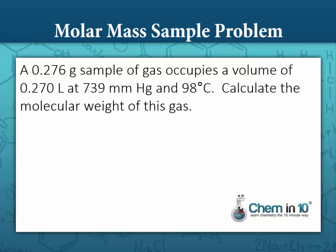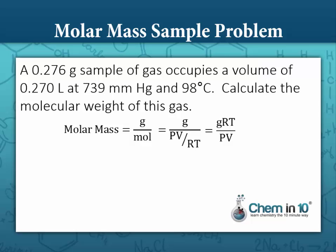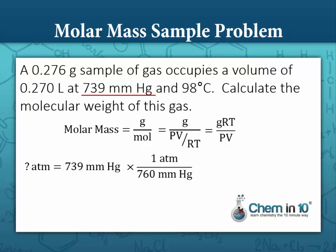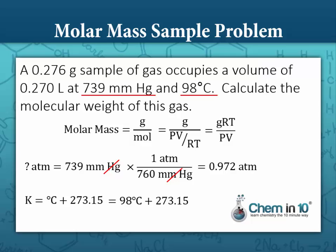A 0.276 gram sample of gas occupies a volume of 0.270 liters at 739 millimeters mercury and 98 degrees Celsius. Calculate the molecular weight of this gas. Our equation is molar mass equals grams times RT over PV. We need to convert 739 mmHg to atmospheres by dividing by 760, giving us 0.972 atmospheres, and convert 98 degrees Celsius to Kelvin by adding 273.15, giving 371.15 Kelvin.